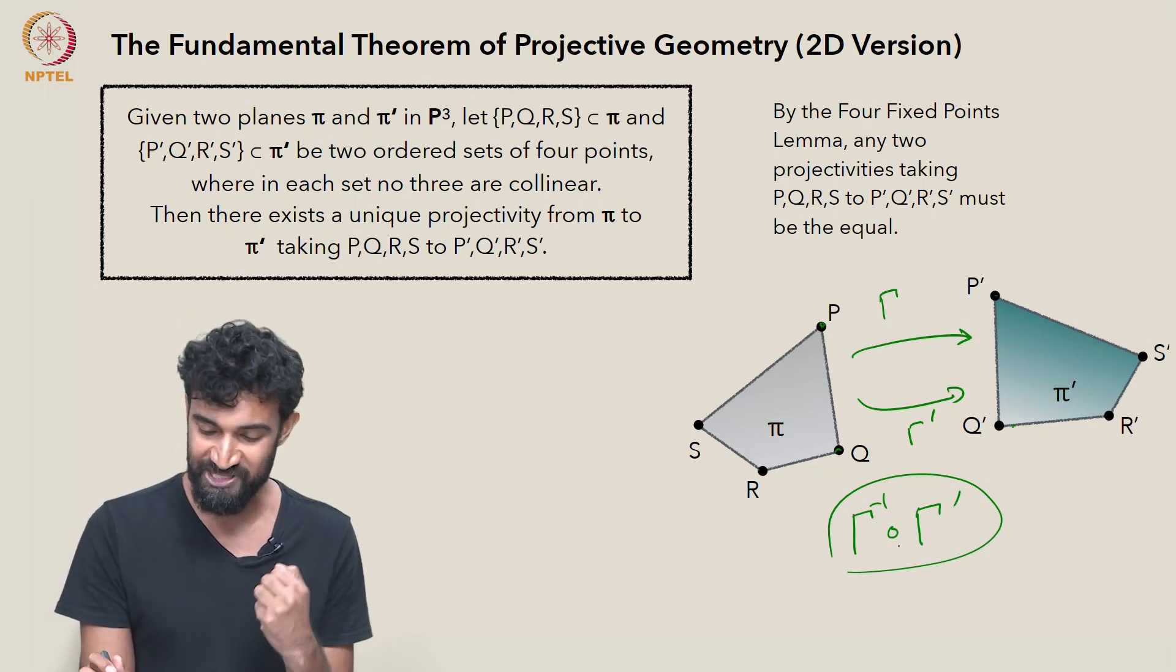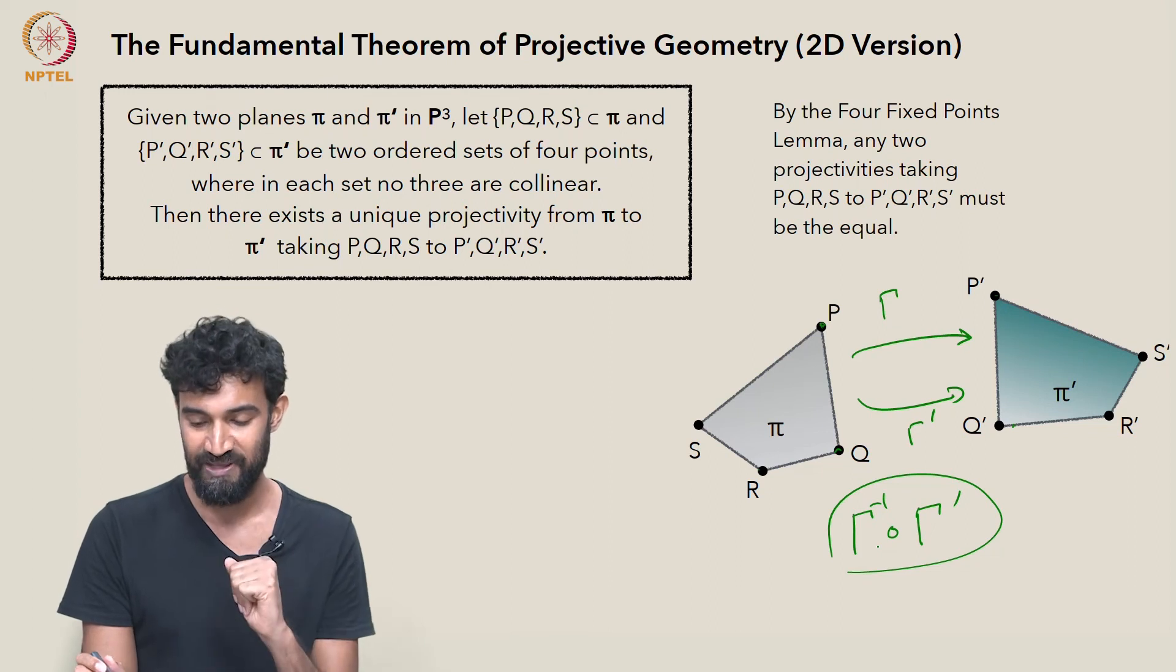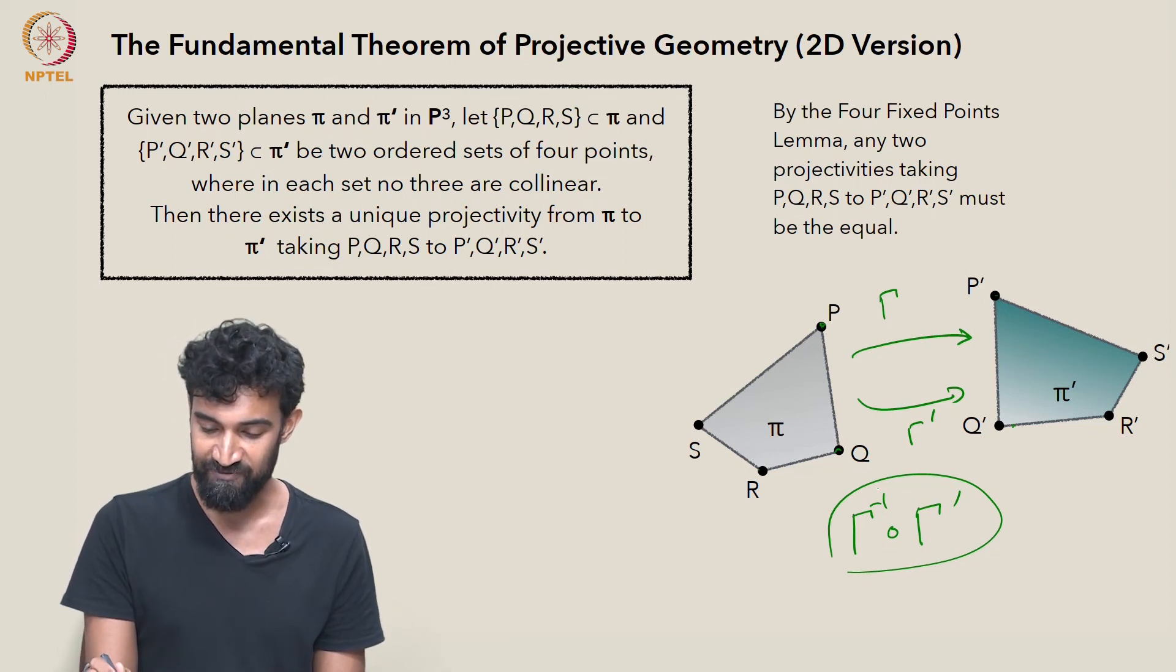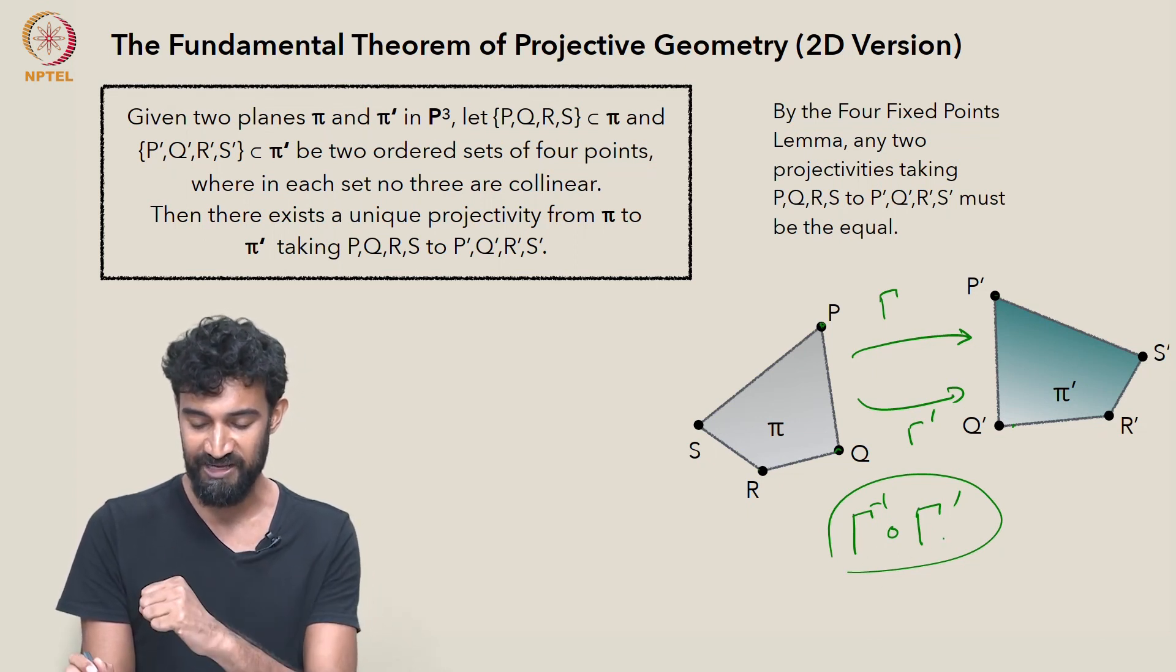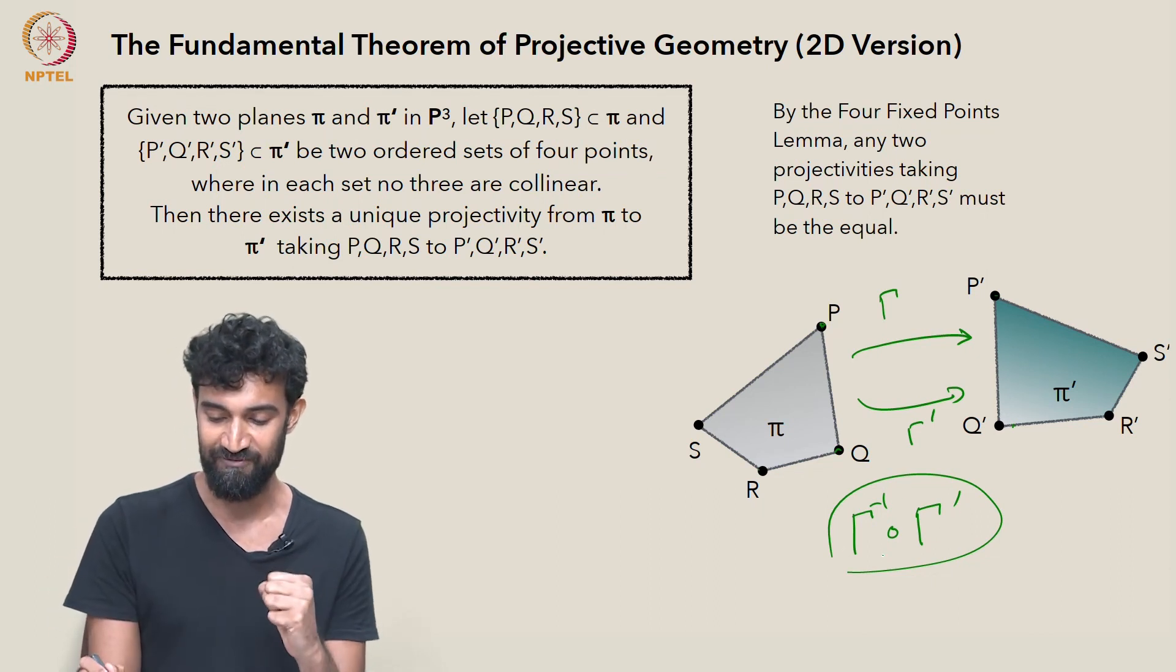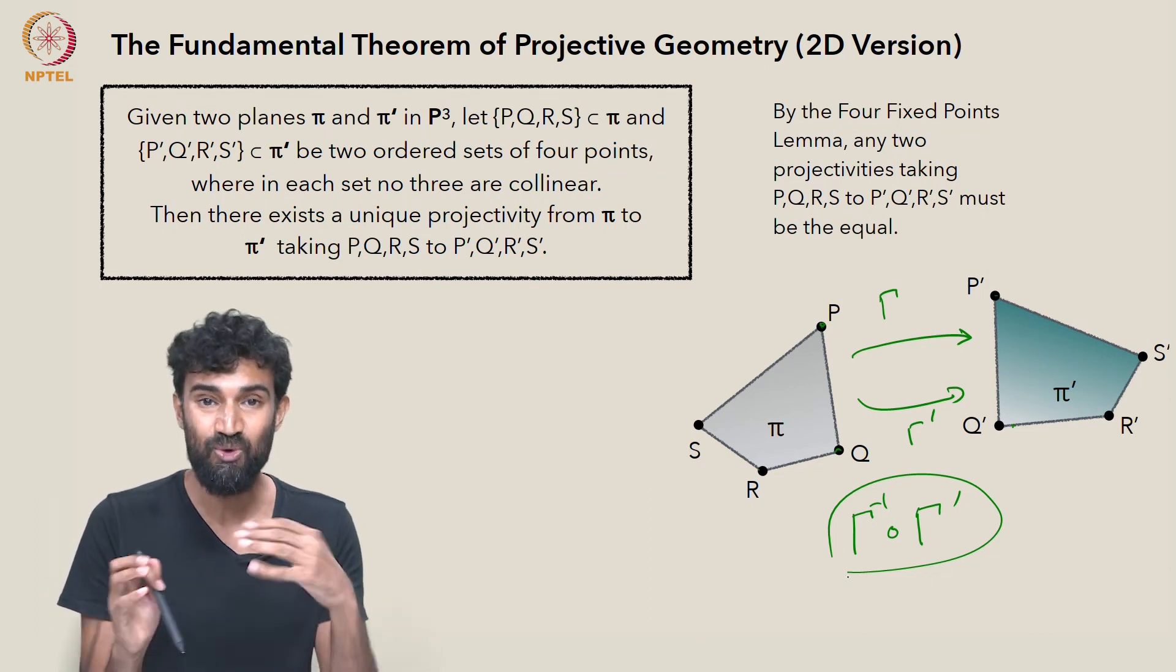So by the four fixed points theorem, it is the identity, which means that γ inverse undoes γ′. Everything that γ′ did is now undone by γ inverse. But γ inverse also undoes γ.